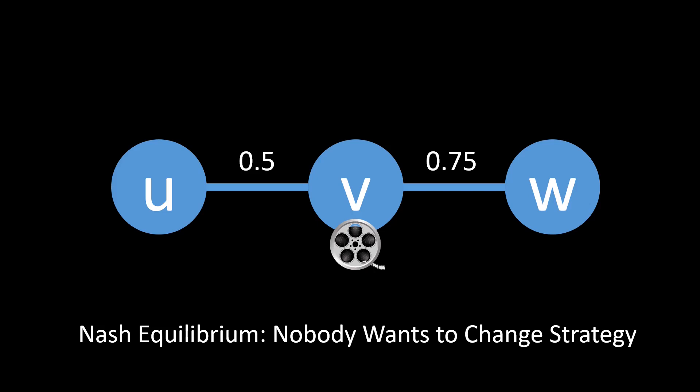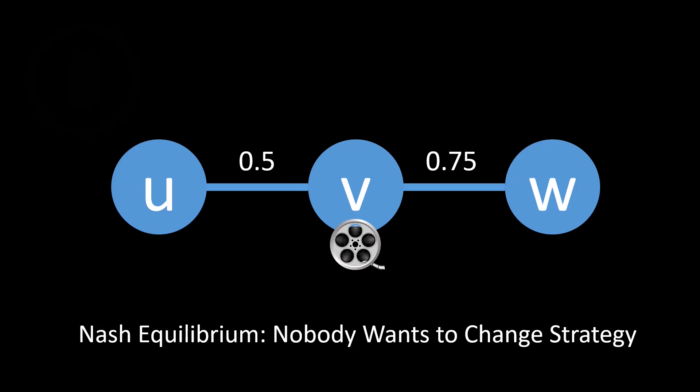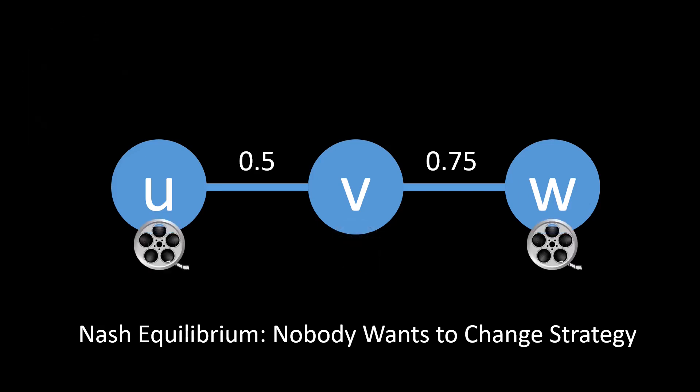Sometimes in a game multiple Nash equilibria exist. Please pause the video and try to find another Nash equilibrium. Indeed, this network does have a second Nash equilibrium. If the two outer nodes u and w cache the movie, we also have a Nash equilibrium. In this case, node v does not want to change its strategy, as it can easily fetch the movie from one of the two outer nodes at a cost which is less than 1.